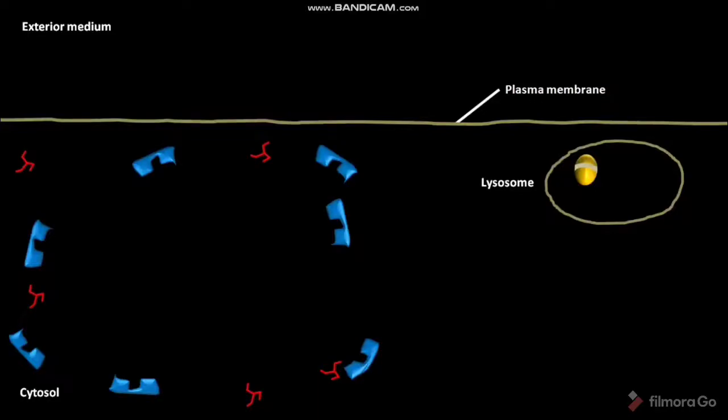In the next step, the proteases and cholesterol esterases in the lysosome hydrolyze the apolipoproteins and cholesterol esters of the LDL particle respectively. Due to this hydrolysis, amino acids, cholesterol, and fatty acids are formed.